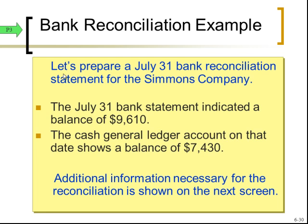Let's take an example. July 31st, Simmons Company has a bank statement. The July 31st bank statement indicates a balance of $9,610. The cash general ledger shows a balance of $7,430. Notice again, the balances don't match right up front — that's not a problem.